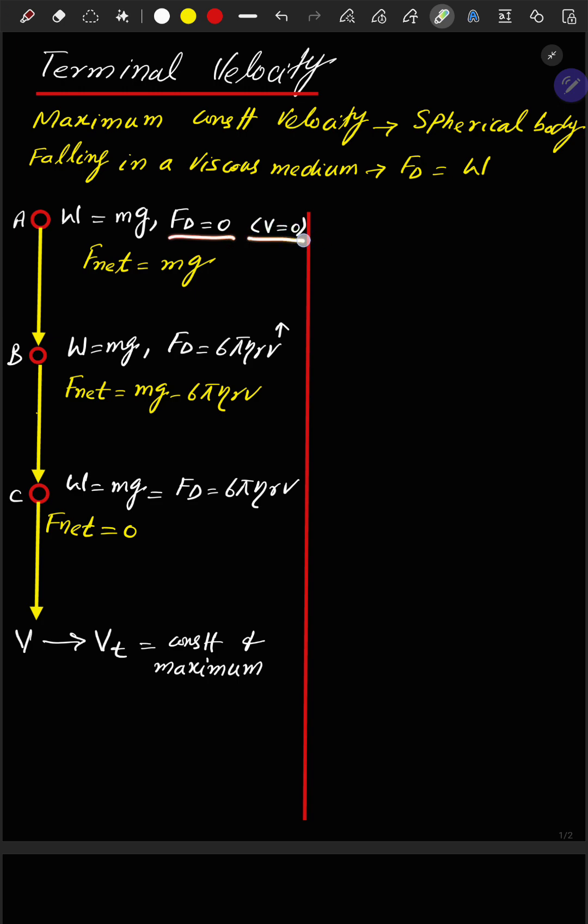As it's at rest, the net force becomes mg. During its journey in the downward direction, the weight still remains mg, but Fd becomes non-zero as the velocity increases, and the net force becomes mg minus 6πηrv.